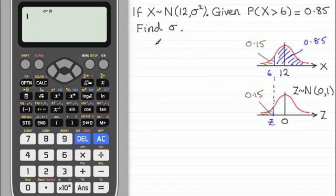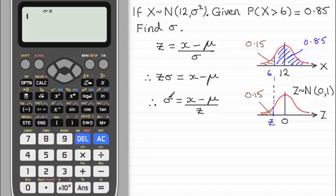Now remember that the standardised value z always equals the observed value from the graph here x minus the mean mu all over the standard deviation sigma. And if we rearrange this equation for sigma by multiplying both sides by sigma and then dividing by z we would get sigma equals x minus the mean mu all over z. So we just need to calculate the z value.